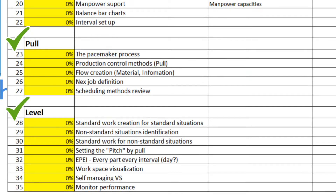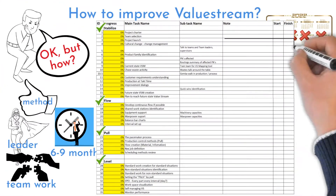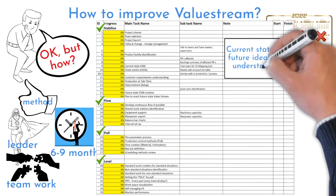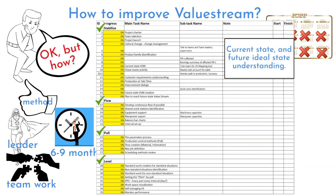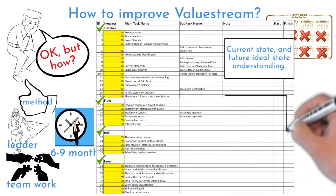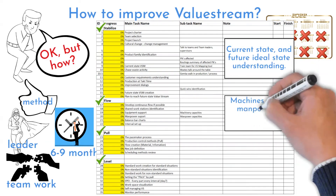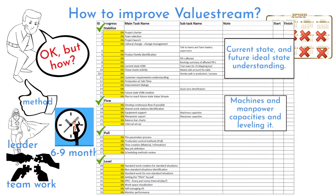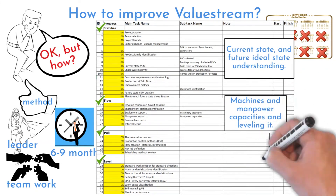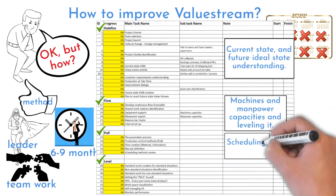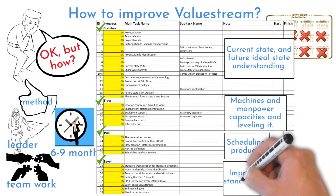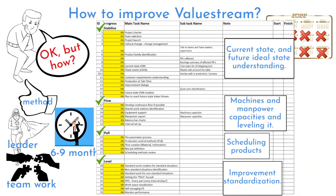Each phase has several steps. Understanding the current and future state is done in the Stabilize phase. The Flow phase is mainly about machine and manpower capacities and balancing them. The Pull phase is about scheduling products through the value stream. The Level phase helps with improvement standardization.